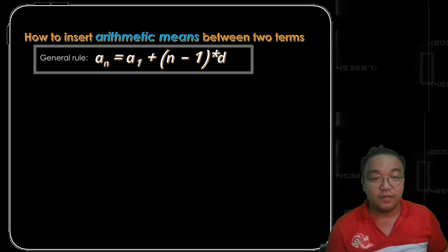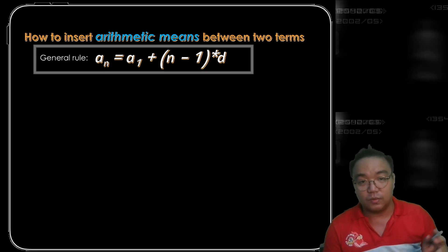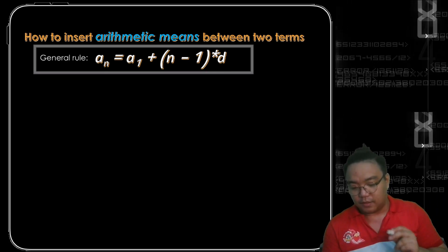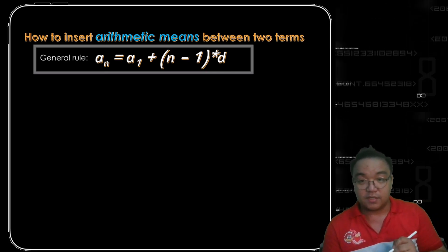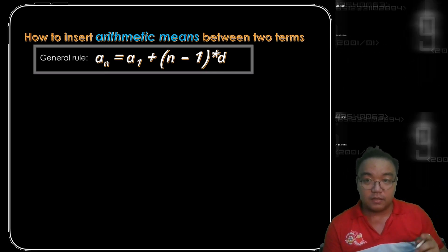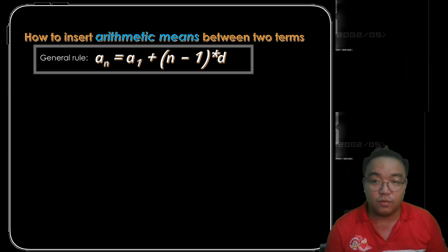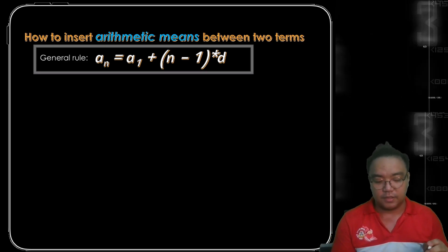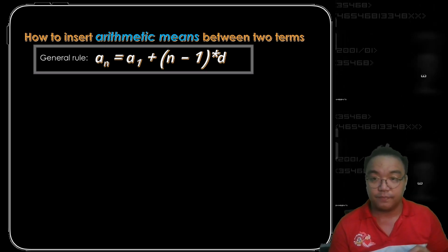We know that the general rule of the arithmetic sequence is a sub n is equal to a sub 1 plus n minus 1 times the common difference d.